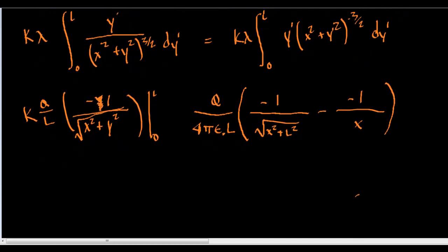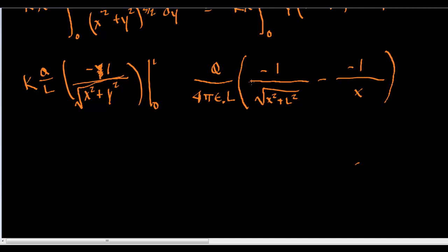Now we can further simplify this by multiplying - so what we do, we multiply both sides by x over x.